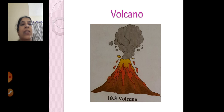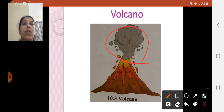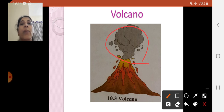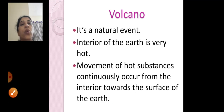Next is volcano. In a volcano, different types of chemical substances come out. Volcano is a natural phenomenon — it is not man-made. Inside the earth, below the earth's surface, it is very hot, and there is always a movement of hot substances from the interior of the earth towards the surface.